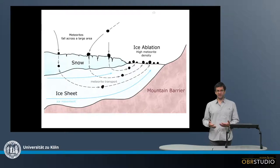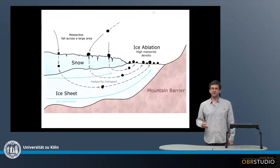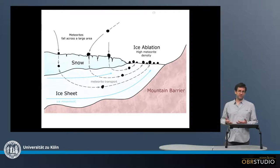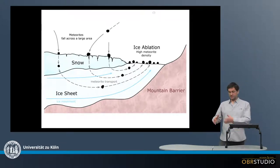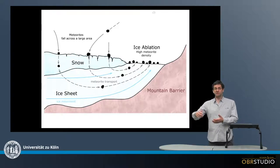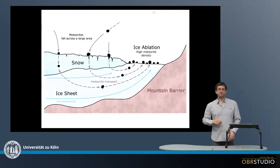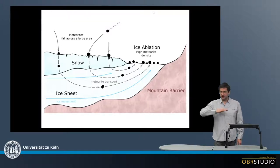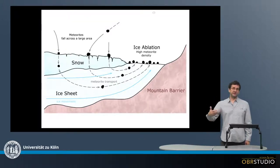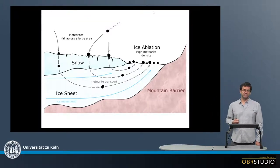Meteorites are mainly found and searched for in hot and cold deserts. The reason is that meteorites weather away quite slowly in these desert environments. Further, the black meteorites can be more easily spotted on brighter plains, and these are often very large plains that can be easily searched by foot or by car.